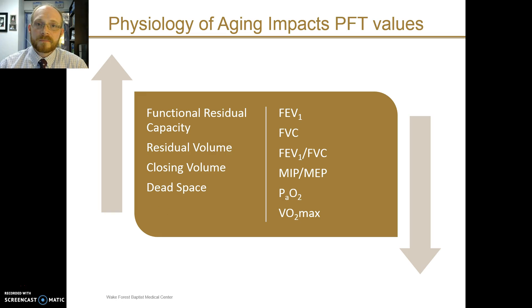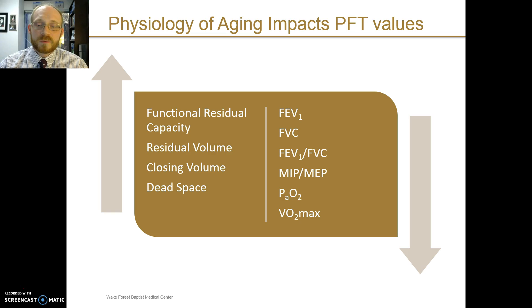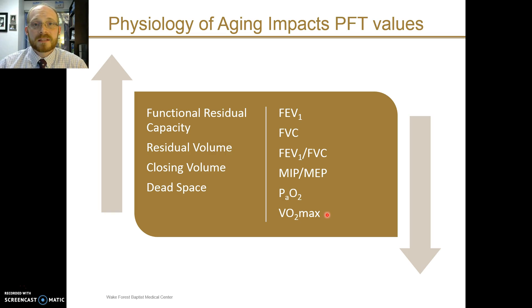Specific measured values affected by aging include FEV1 and FVC, which both decline with aging, as well as the FEV1/FVC ratio. Measures of respiratory muscle strength such as MIP and MEP also decrease with age. The normal value for arterial oxygen decreases, and the total capacity for exercise — VO2 max — decreases as well.